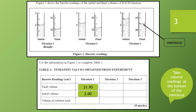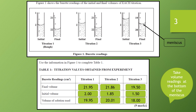The initial volume is around 2.00, just sitting on 2.00, and the final volume I'm estimating to be about 21.9 — just about in between 21.9 and 22, so you have to do some estimation for that second decimal place. Likewise, for the second titration we get values of around 1.85 and 21.86, and for the third the initial volume is sitting right at 1.5 and about 19.5 for the final. We subtract initial from final to get the actual volume used.